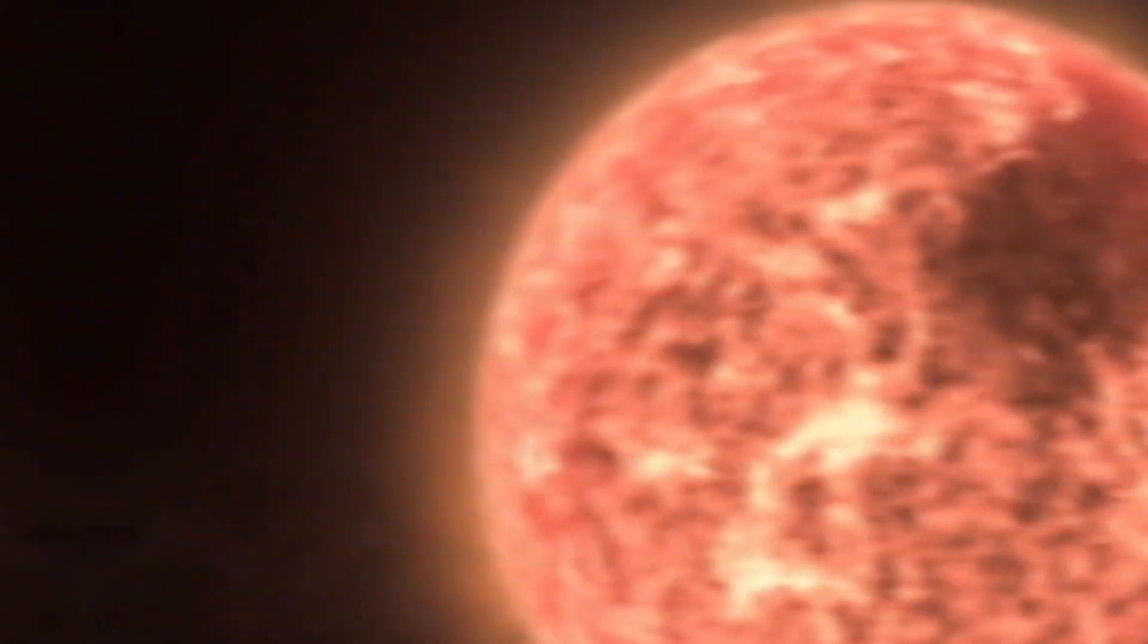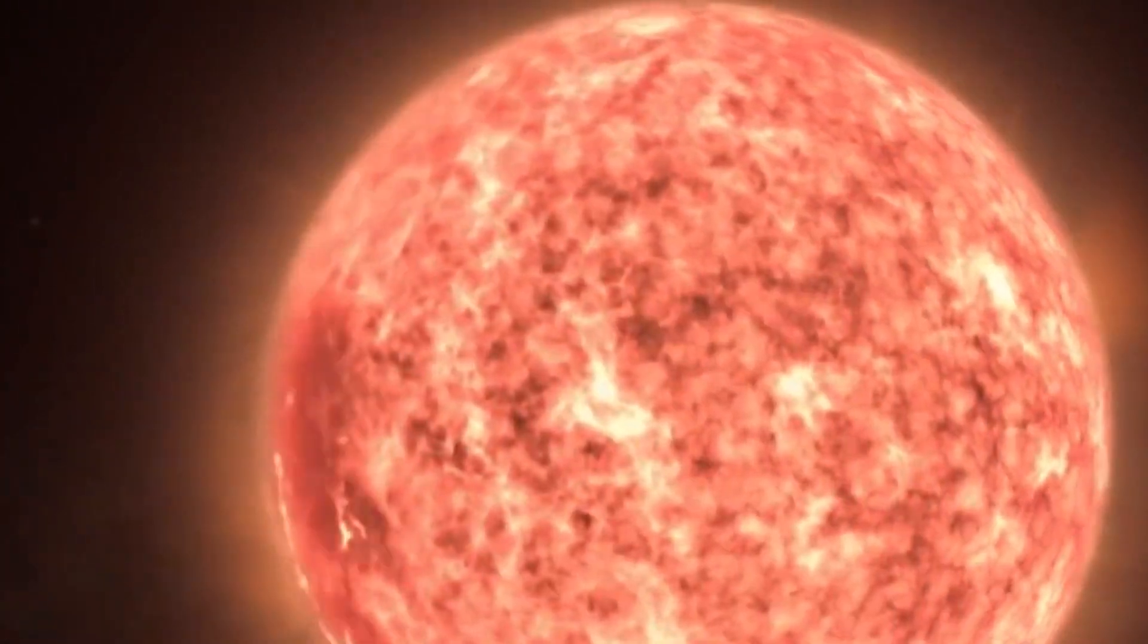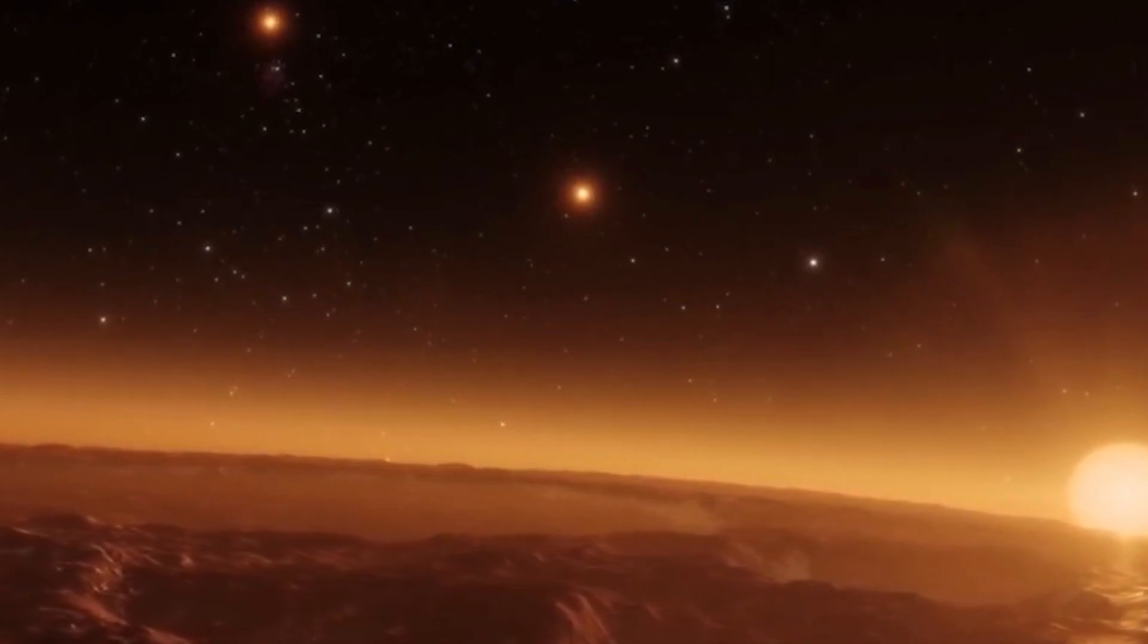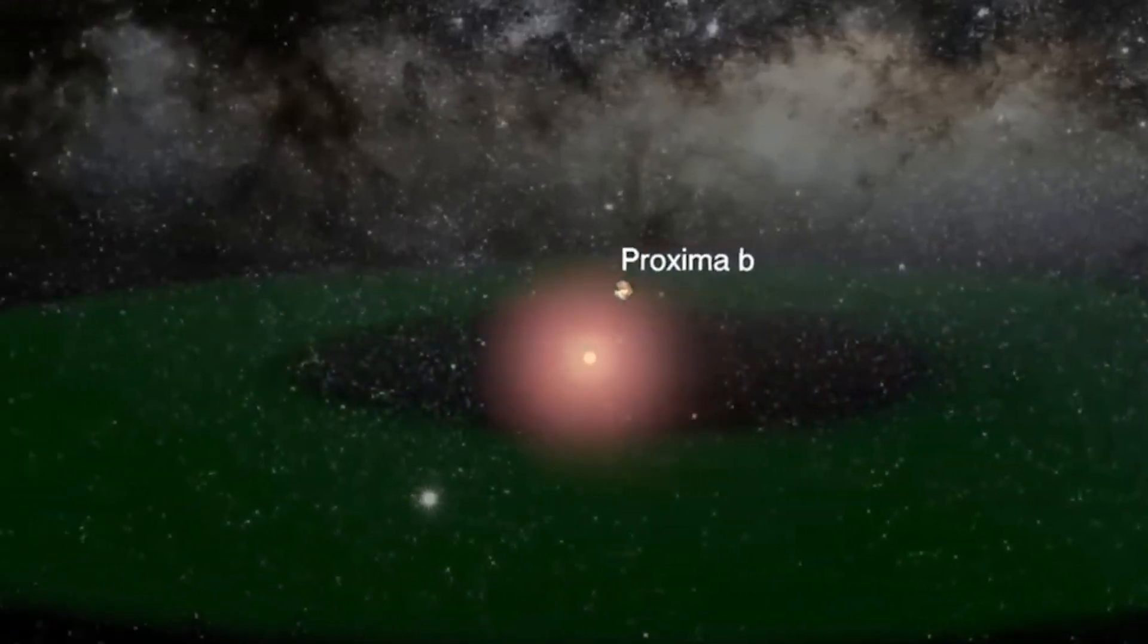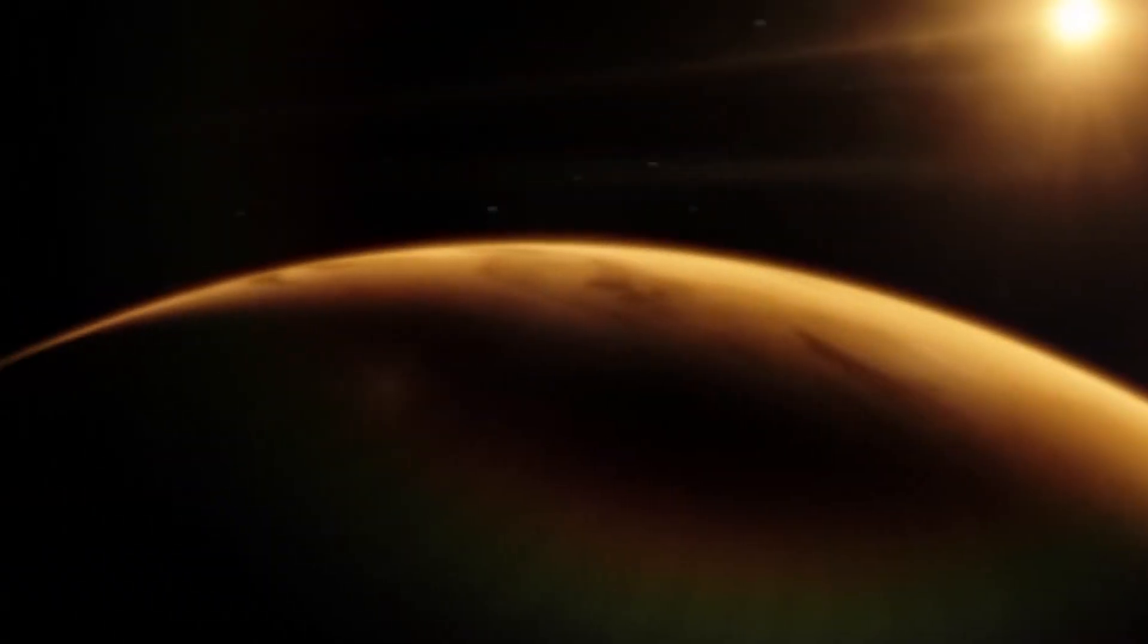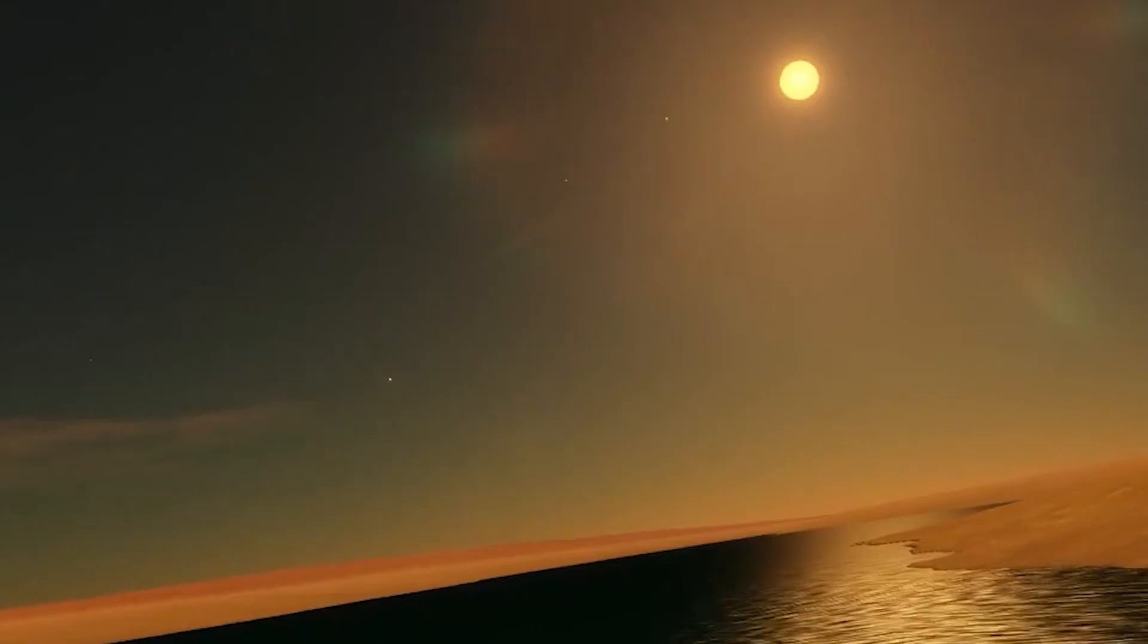As such, aurora phenomena might be observed from observatories on Earth. But how stable would such an atmosphere be? The only benchmark scientists have so far is Earth's atmosphere. How would things play out if Earth was placed in Proxima b's shoes?